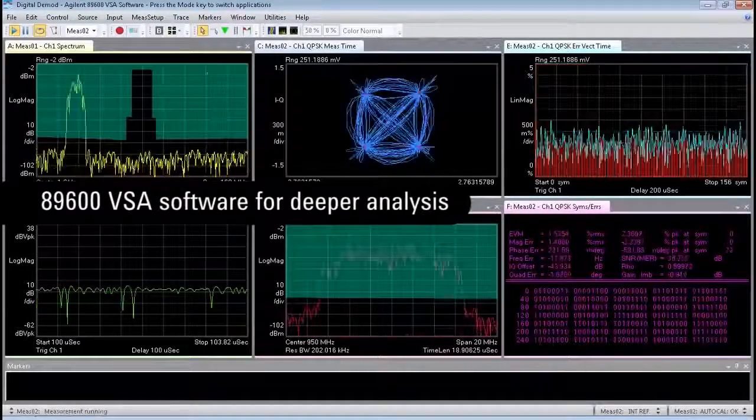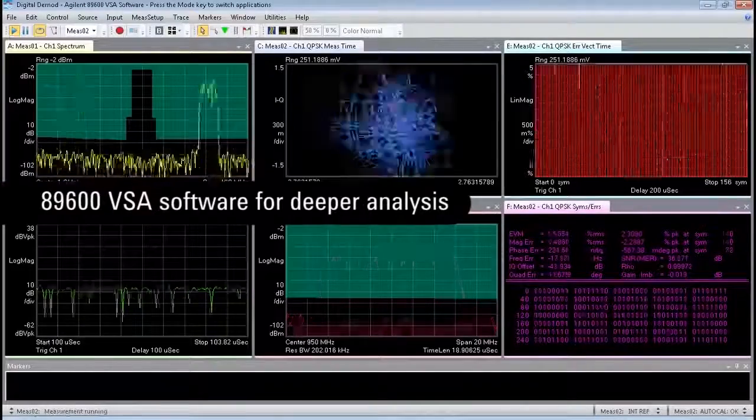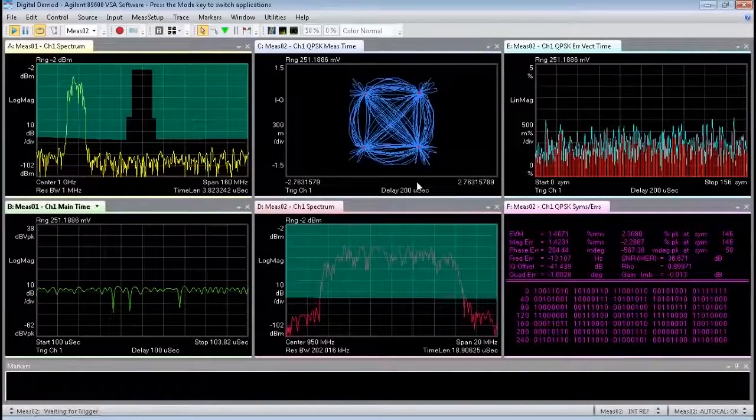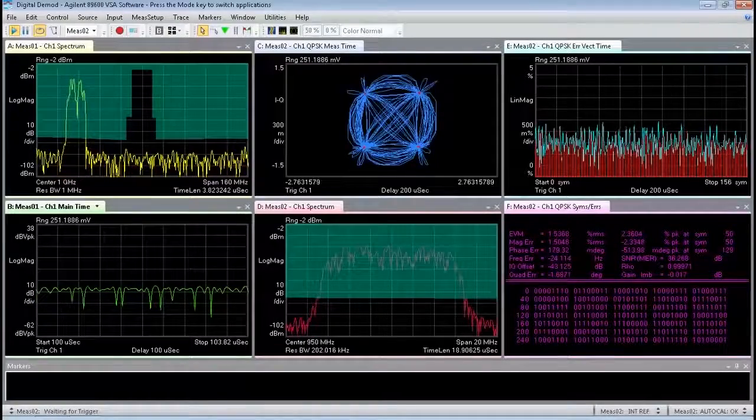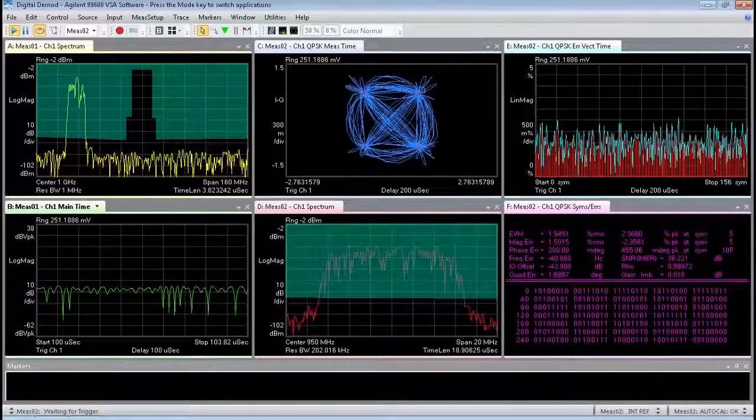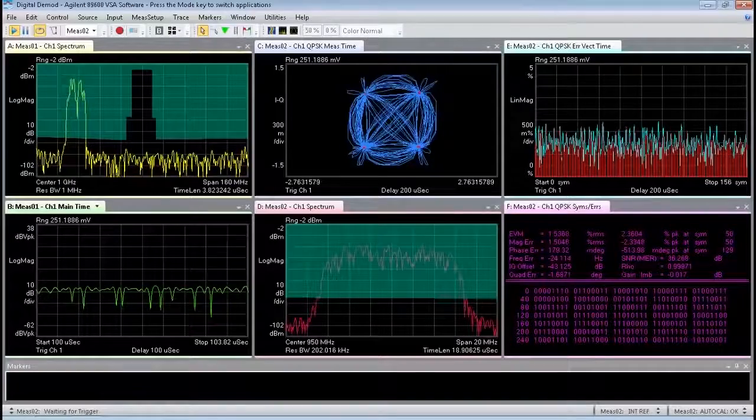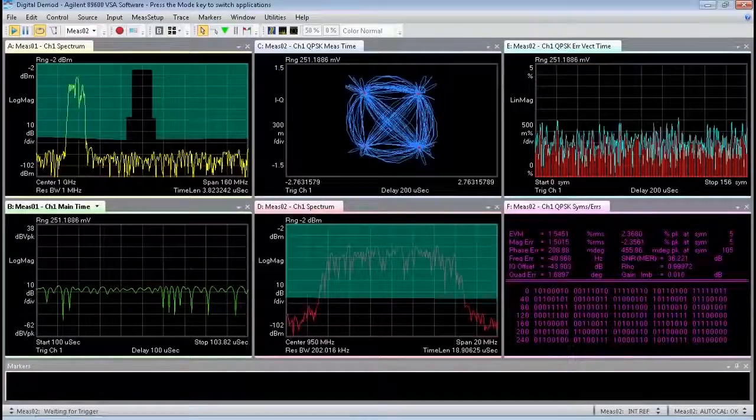Importing the mask into 89600 VSA software allows us to do a recording based on the real-time frequency mask trigger. This same functionality can be used to understand how the signals behave with interference or to make measurements when spurs or other impairments are present in the spectrum.